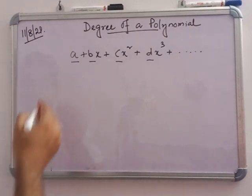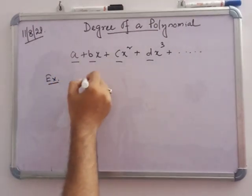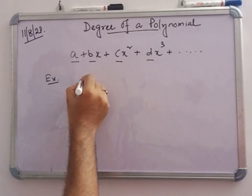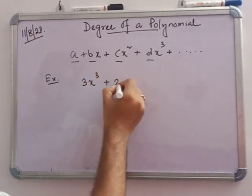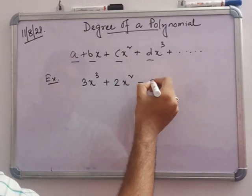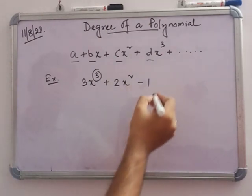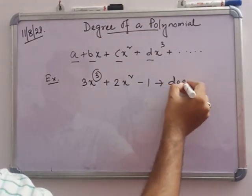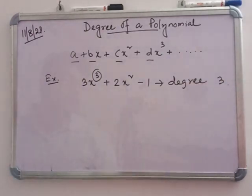For example, if we write 3x cubed plus 2x squared minus 1, then the highest power is 3. That means the degree is 3.